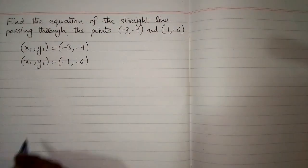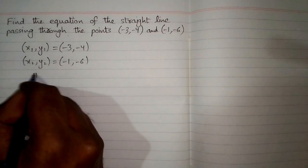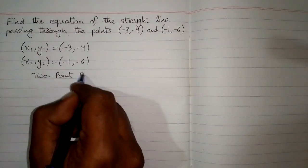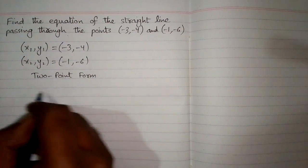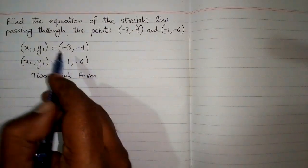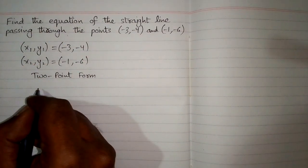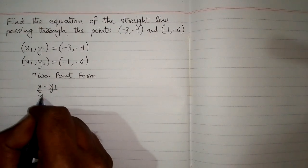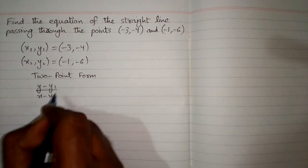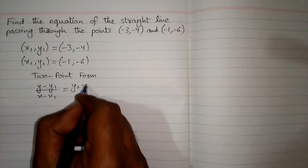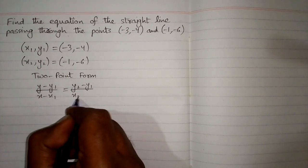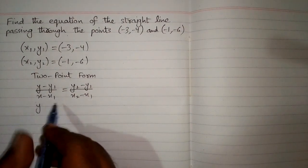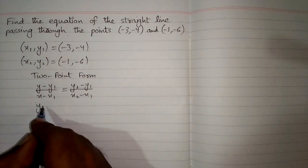x2, y2 is equal to minus 1 and minus 6. Now we will use the two-point form of the equation to find the equation of the straight line. The two-point form is: y minus y1 upon x minus x1 is equal to y2 minus y1 upon x2 minus x1. Now the value of y1 is minus 4, so